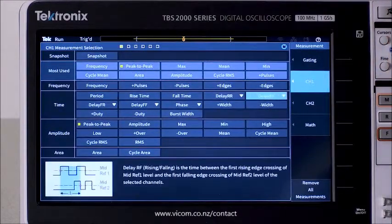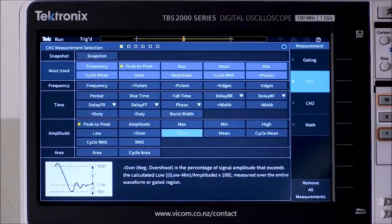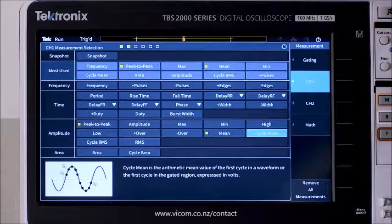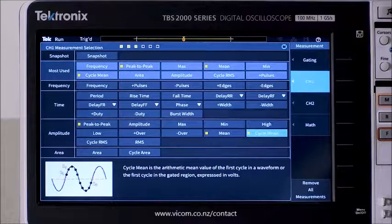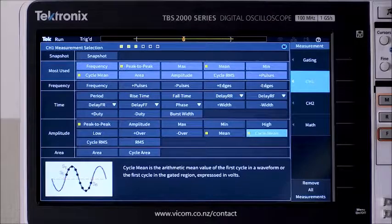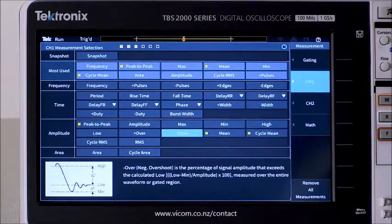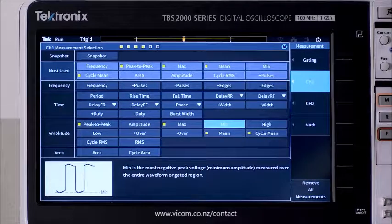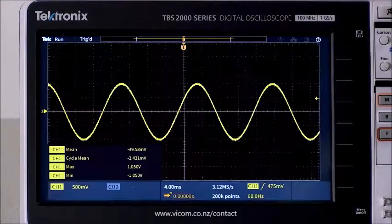Now I'll turn on the mean measurement. I'll also turn on cycle mean. Measurements that begin with the word cycle are calculated over the first full cycle in the gated part of the record. In this case, that's the screen. I'll also turn on min and max for reference, and I'll turn off peak to peak because we don't need it.